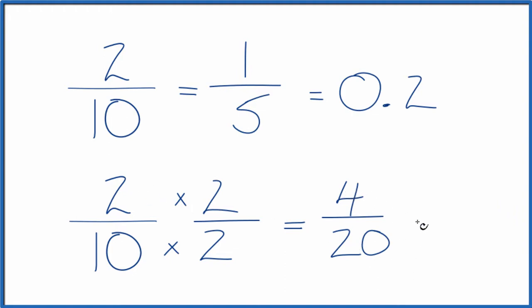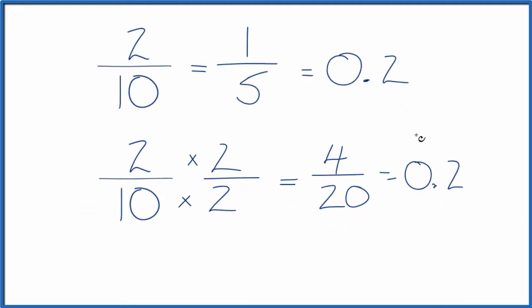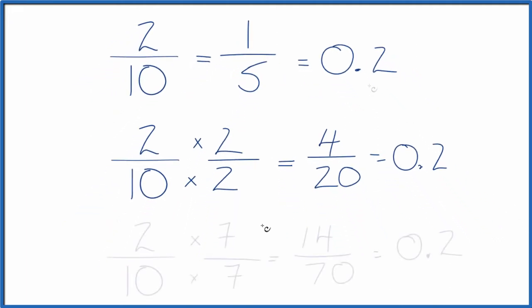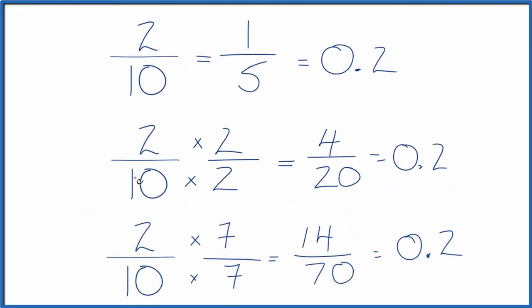Divide four by twenty, you get 0.2, just like we found before. Let's do one more. We could multiply by seven over seven — that's still one. We get fourteen over seventy, which is another equivalent fraction for two-tenths.